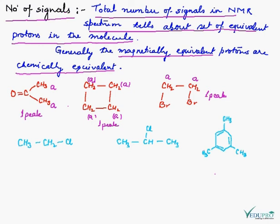Let's take some other cases. Here we have CH3, CH2, and Cl. In this signal, the protons will be different — the CH3 proton will be a different type. So we will have 2 peaks and 2 signals. The area of the signals will be 3 protons equivalent and the other signal will be 2 protons.